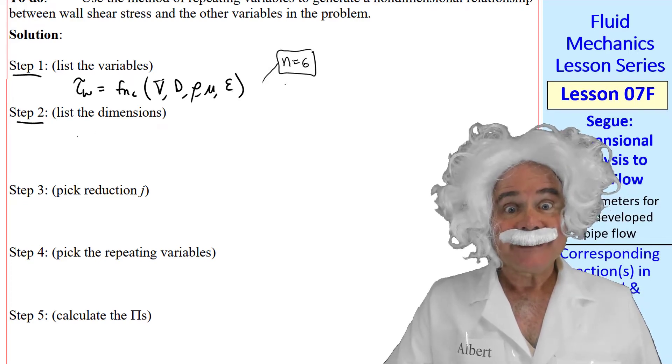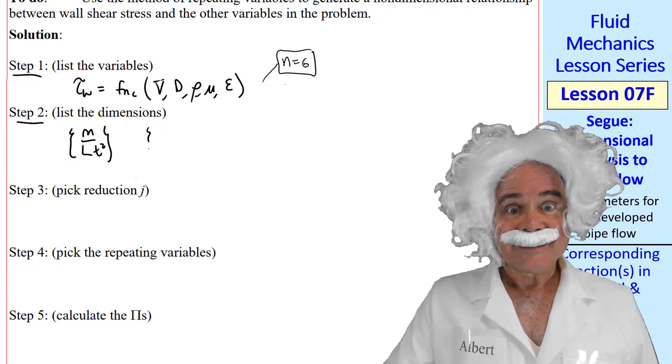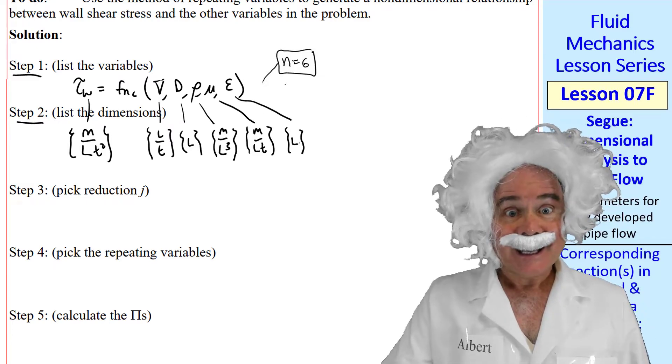Step two. List of primary dimensions. Tau has dimensions of m over lt squared. v is l over t. d is l. Rho is m over l cubed. Mu is m over lt. And epsilon is l.